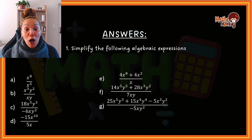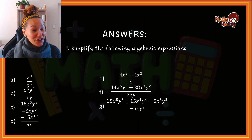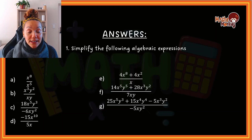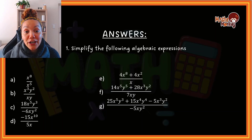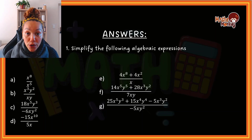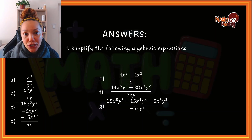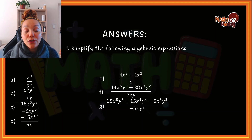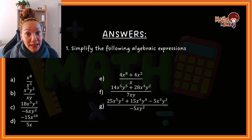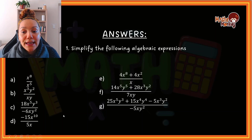Hopefully you completed that and feel confident about your answers. We can now work through them. It will be helpful to tick the ones you got correct and make corrections for the ones you got wrong, because that is where you need to pay attention — note what you did wrong so you don't make the same mistake again. For question a: x to the 8 minus the 5 gives your answer x to the power of 3.